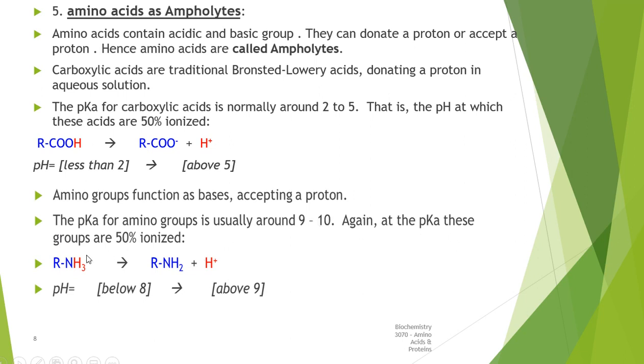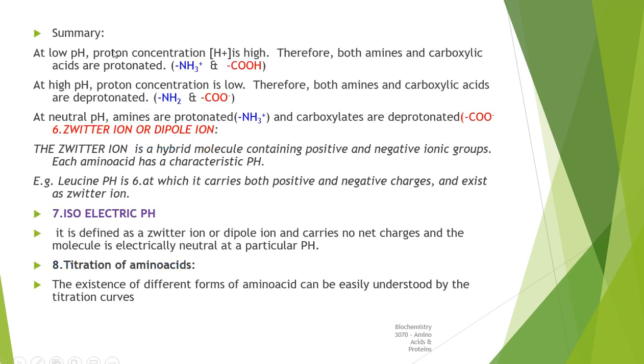Amino groups function as bases and accept a proton, and its pKa is 9 to 10. These are about 50% ionized. On dissociation we will get R-NH2+ and H+, where pH is equal to 8, and this is going to be in the 9.